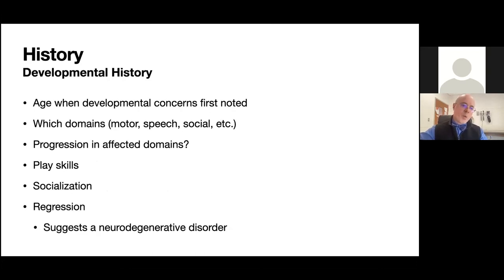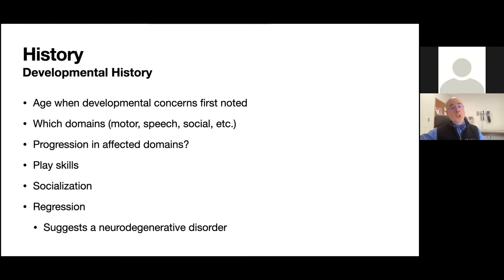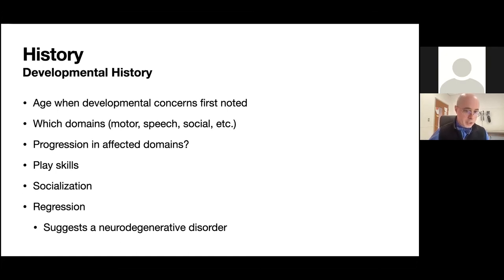Developmental regression or loss of previously acquired milestones suggests an underlying degenerative process, whether genetic or epileptic. Key examination pearls: keep children close to their parents since they're often nervous, and leave more intrusive aspects such as fundoscopic exam, pupillary light reflex, and reflex checking until the end. I pay close attention to head circumference, often measuring the parents' as well, and look for dysmorphic features suggesting a possible genetic process.